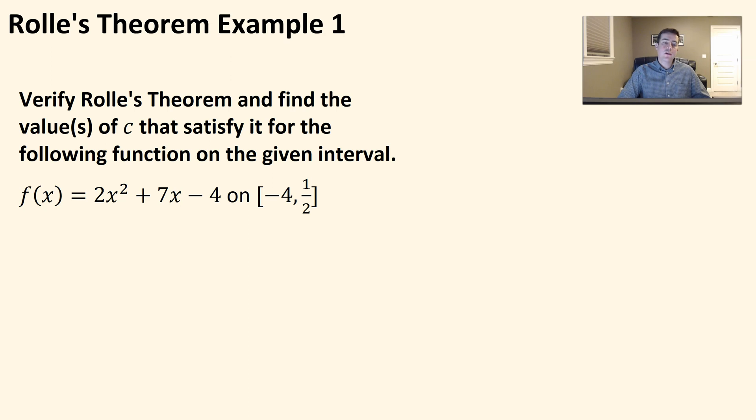Once again, this function is a polynomial, so it's quadratic, which means it's automatically going to be continuous and differentiable on this interval. So now what we need to do is we need to show that F of A is equal to F of B because there's three conditions. First, it's continuous on the interval, it's differentiable on the interval, and F of A has to equal F of B. So let's make sure that that holds true here first.